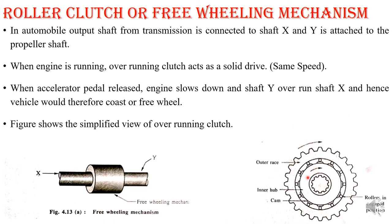The overrunning clutch consists of an inner race, which is the driving part. The outer shell is the driven part. On the outer side of the inner shell, it consists of tapered cams which are evenly spaced on the circumference at equal distances. A number of tapered cams are placed outside of the driving shell or inner hub, and between each cam we have placed one roller.